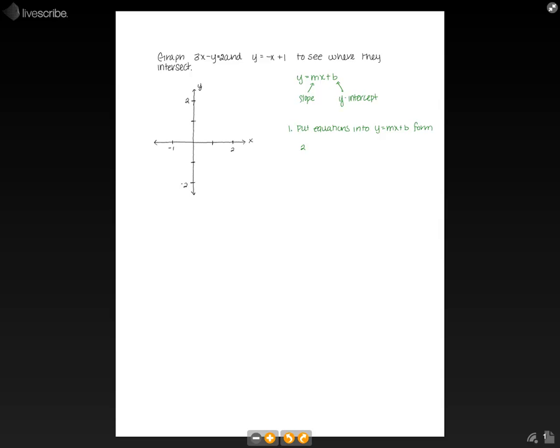So our equation says 3x minus y equals 2. We need to get y by itself, so the first thing we're going to do is subtract 3x from both sides. When we do that, we get negative y equals 2 minus 3x. Now we need to divide both sides by negative 1 to get rid of that negative sign, and we get y is equal to 3x minus 2.